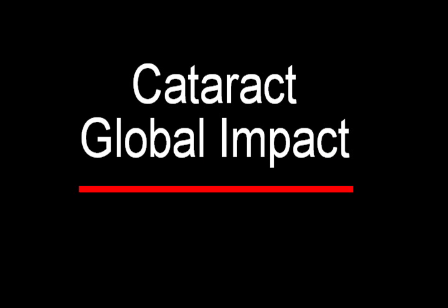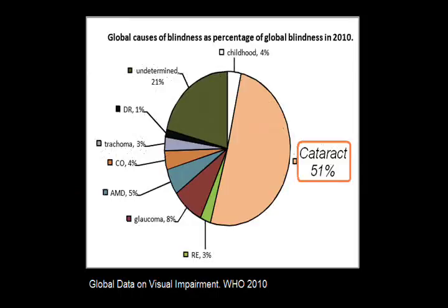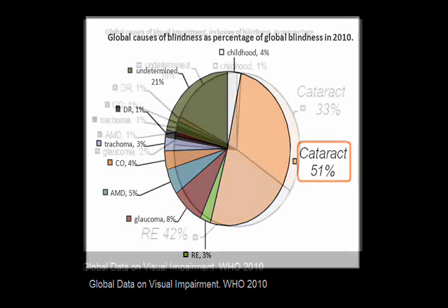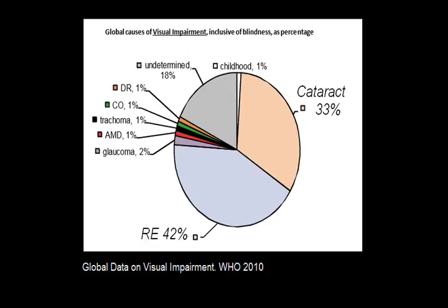In the big picture, how important is cataract? Worldwide, cataract is the leading cause of blindness at 51% — nothing else is even close. Consider that this could be fixed by surgery if the resources were available. Looking at vision impairment in general including blindness, cataract is still a large part at 33%, but the largest part at 42% is labeled RE — that is refractive error, the need for glasses, an even easier problem to fix if resources were available.